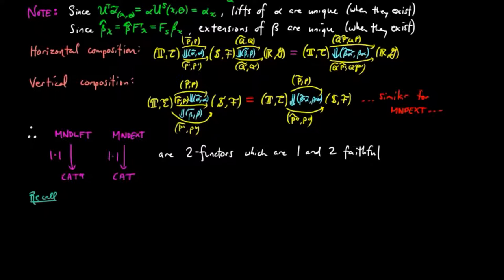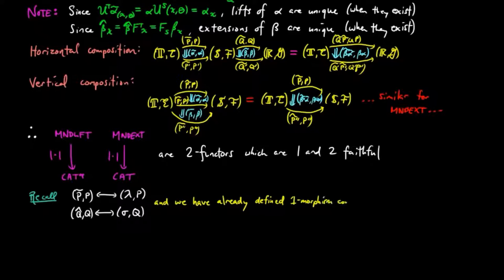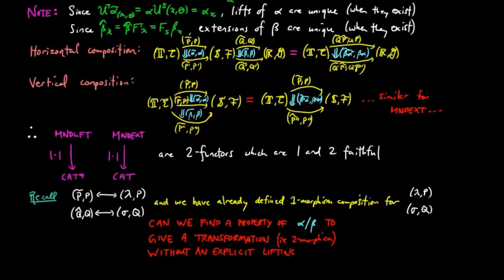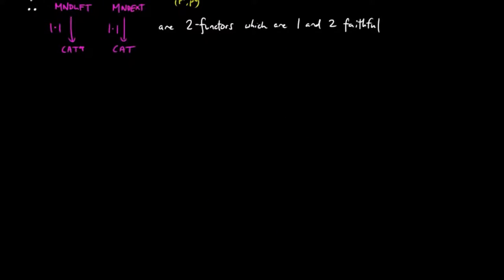Recall that we gave an equivalent way of describing one-morphisms in monad lifts and monad extensions. So we ask: can we find a property of α and β to give transformations without an explicit construction of a lift or extension? The following result gives us a way to do this.